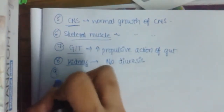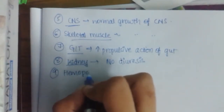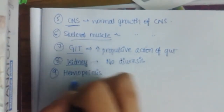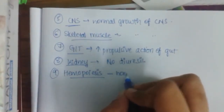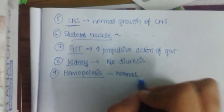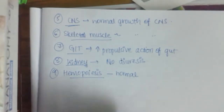The ninth action is on hemopoiesis. Thyroid hormone is required for normal hemopoiesis. Hypothyroid patients may suffer from anemia.